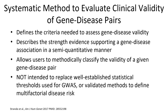This framework is currently optimized for genes associated with monogenic disorders. It is distinct from and is not meant to be suitable for the well-established statistical thresholds used for genome-wide association studies or validated methods to define multifactorial disease risk.